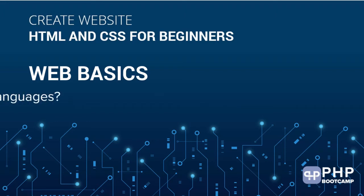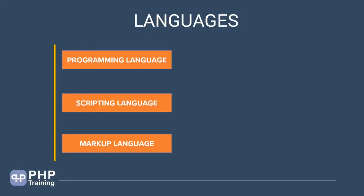Hello and welcome to the lecture. Let's understand the types of languages that we have. We have three different types of languages: programming languages, scripting languages, and markup languages. You have to understand the difference between them because they are written and implemented differently. The purpose of each of these languages is to solve different challenges.